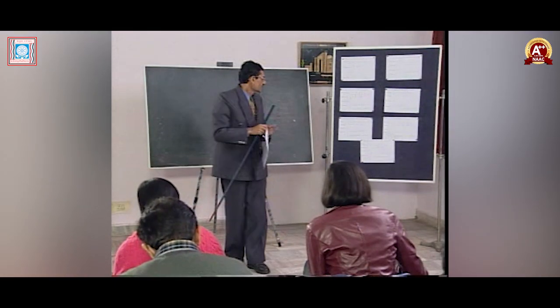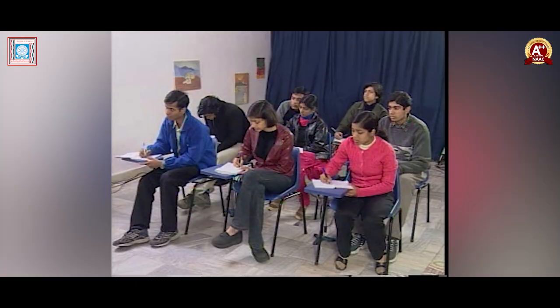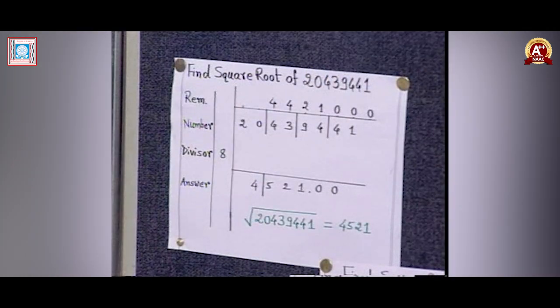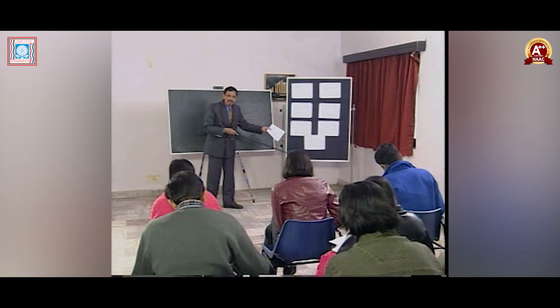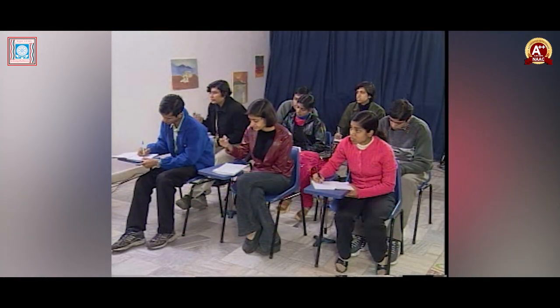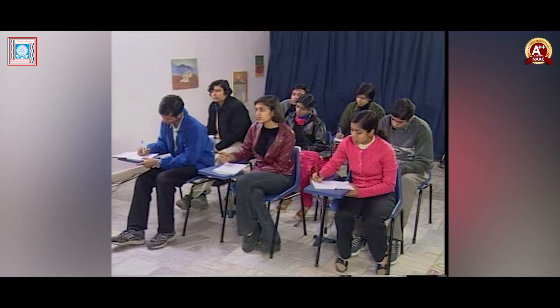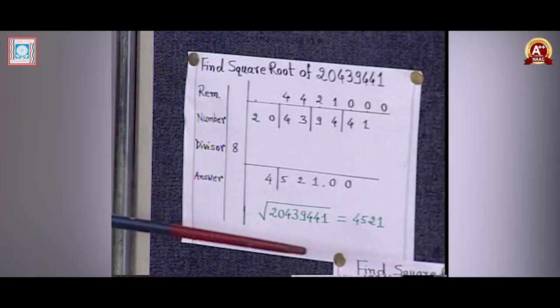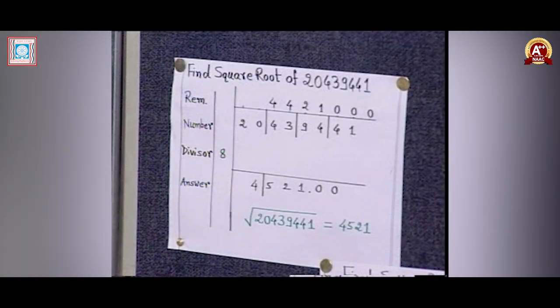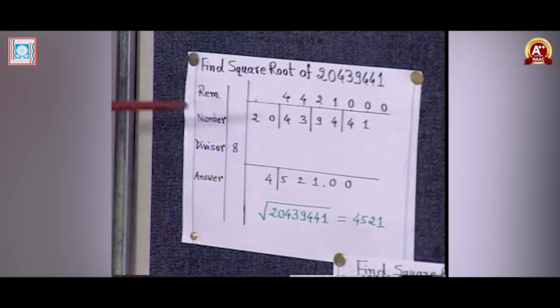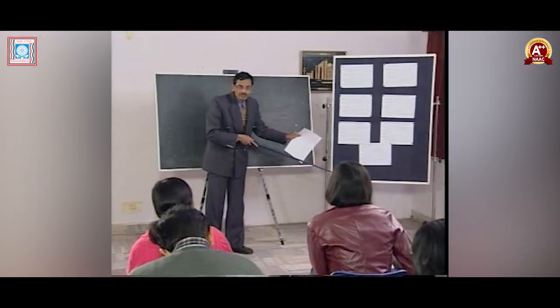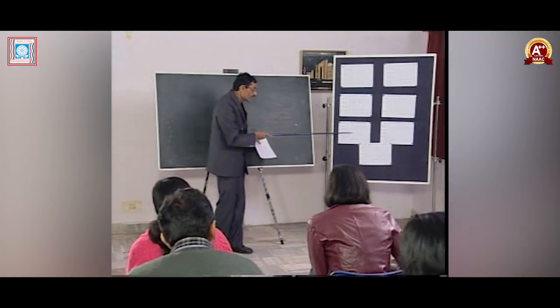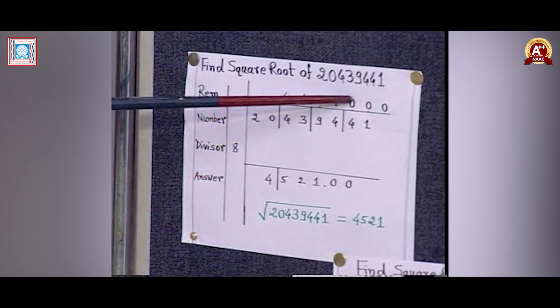Continuing with √20439441: 44 divided by 8 gives quotient 5, remainder 4. Then 43 minus D(5) equals 43 minus 25 equals 18. 18 divided by 8: quotient 2, remainder 2. Then 29 minus D(5,2) — D(5,2) equals 2 times 5 times 2 equals 20. So 29 minus 20 equals 9. 9 divided by 8: quotient 1, remainder 1. Then 14 minus D(5,2,1): 14 minus 14 equals 0. 0 divided by 8: quotient 0, remainder 0.